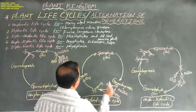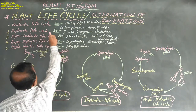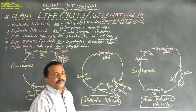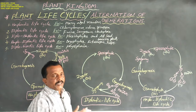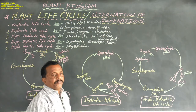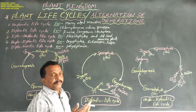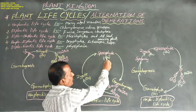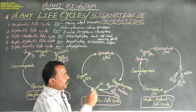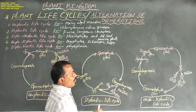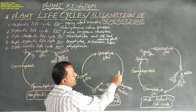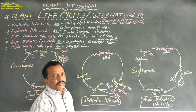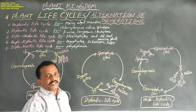Next, coming to diplontic life cycle. Diplontic life cycle is seen in Fucus, Sargassum, and also Cladophora. The thallus body or plant body is generally diploid number of sporophyte. This diploid sporophyte undergoes mitosis to produce gametes — that is gametogenesis.